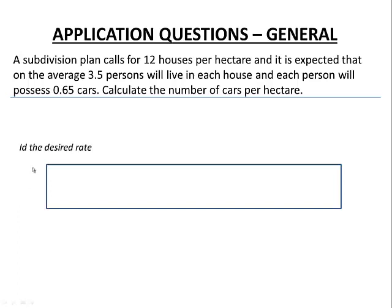The first thing we are going to do is identify our desired rate — how many cars per hectare. We can use our unit ratio technique to help us with this, following the same process once we have identified what our desired rate is.